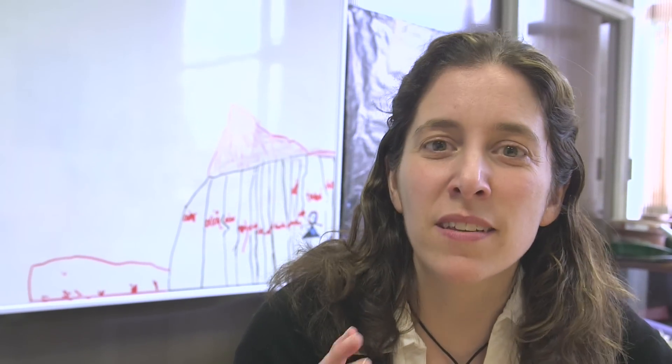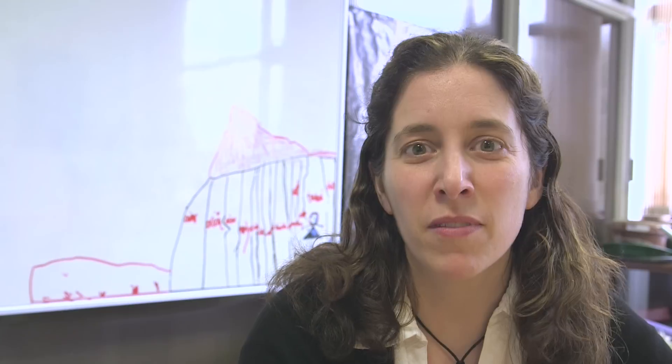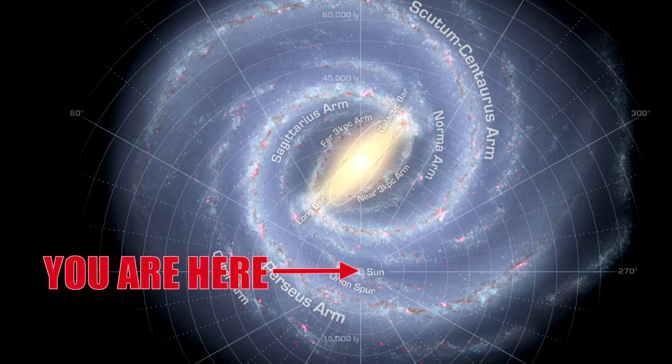Except that this one isn't so far above the outskirts of our galaxy — it's actually quite close into the galactic center. It's only 6,000 light years away from the center of our galaxy, so it's actually closer to the center of our galaxy than it is to us. We're about two-thirds of the way to the edge of our galaxy.